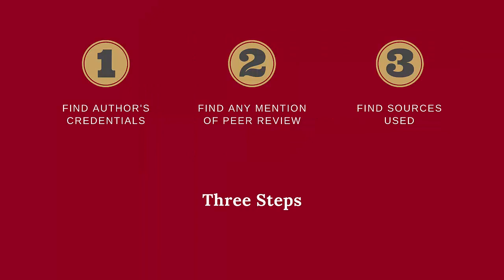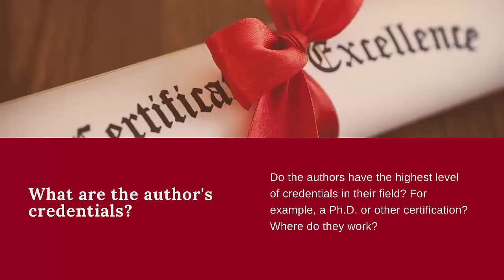There are three steps to take to determine if a journal article is scholarly or not. The first step is to look at the credentials of the authors. Do they have PhDs in the subject area they are writing about? If you can't find the author's credentials by looking at the journal article, you should use Google to find more information on them.